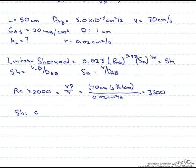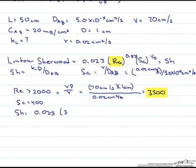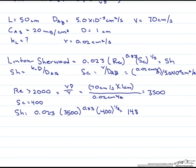Now let's calculate the Sherwood number. We still need to calculate our Schmidt number first, and when we do that, we get 400. So now we are ready to use this correlation: 3,500 raised to the 0.83 times 400 raised to the one-third. Our Sherwood number is going to be 148.